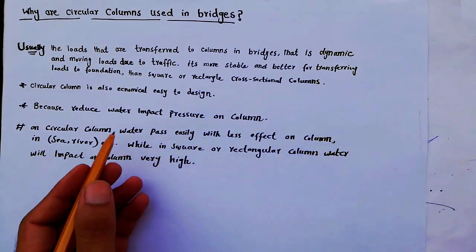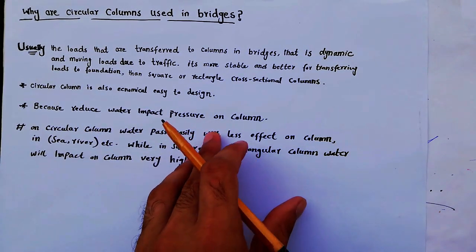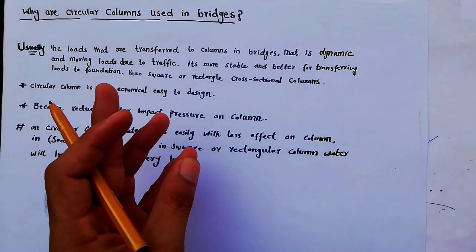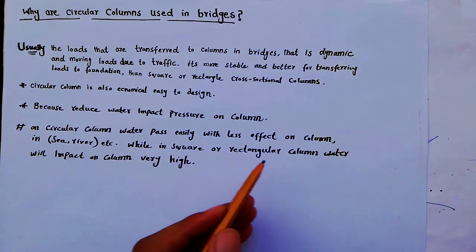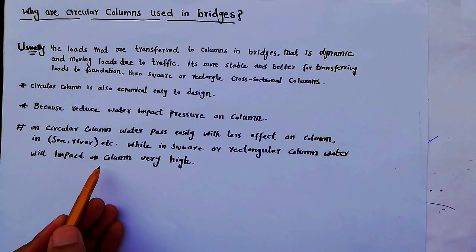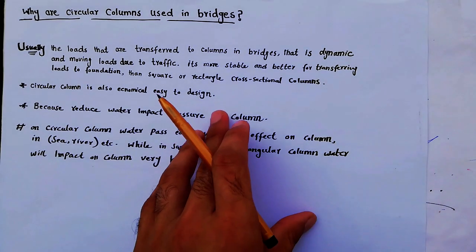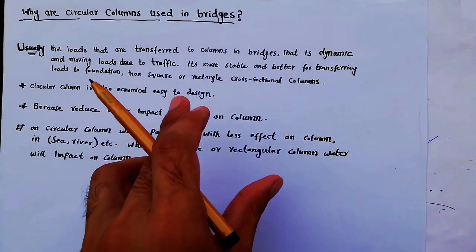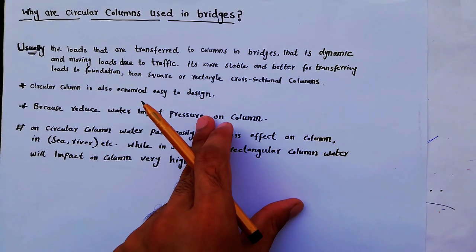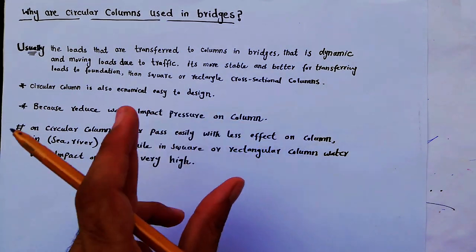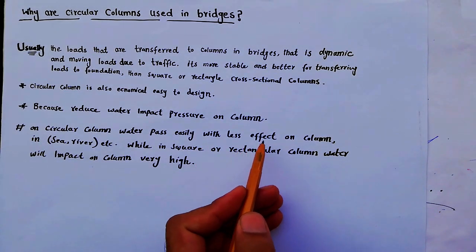Circular columns cannot make any obstacle for water in rivers, seas, etc. In contrast, square or rectangular columns create obstacles for water, causing high water impact on the column. With circular columns, water passes easily with less effect on the structure.